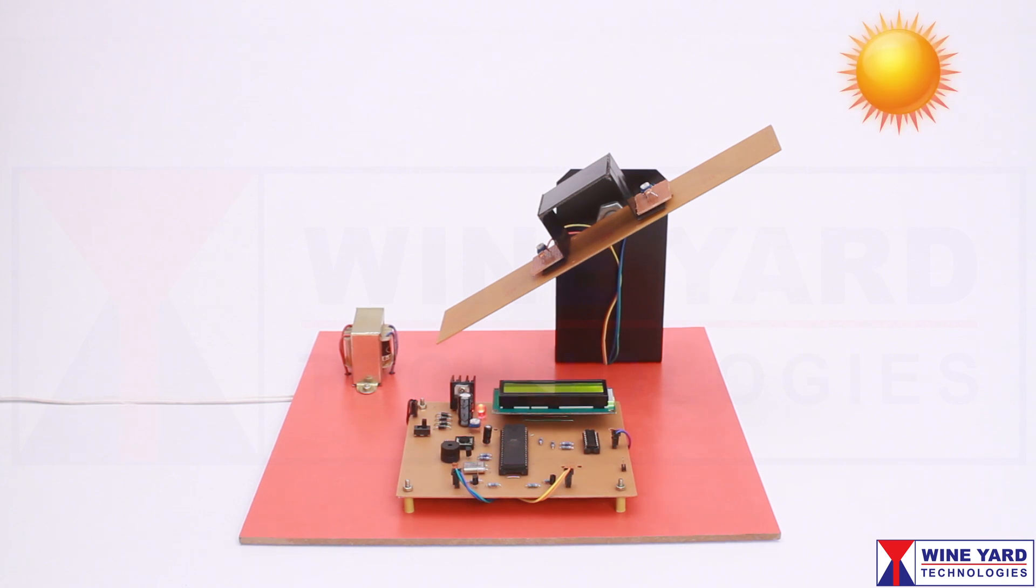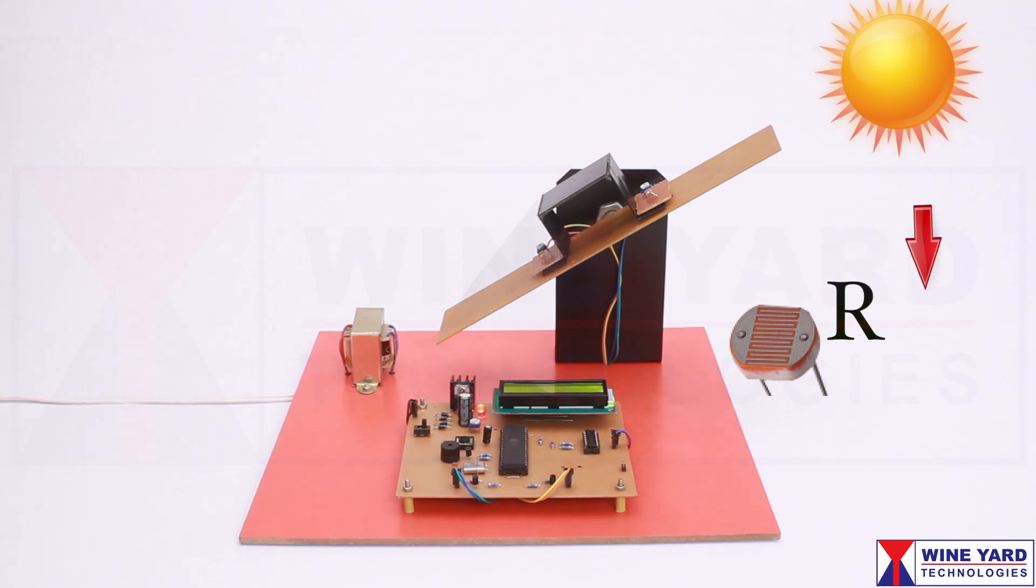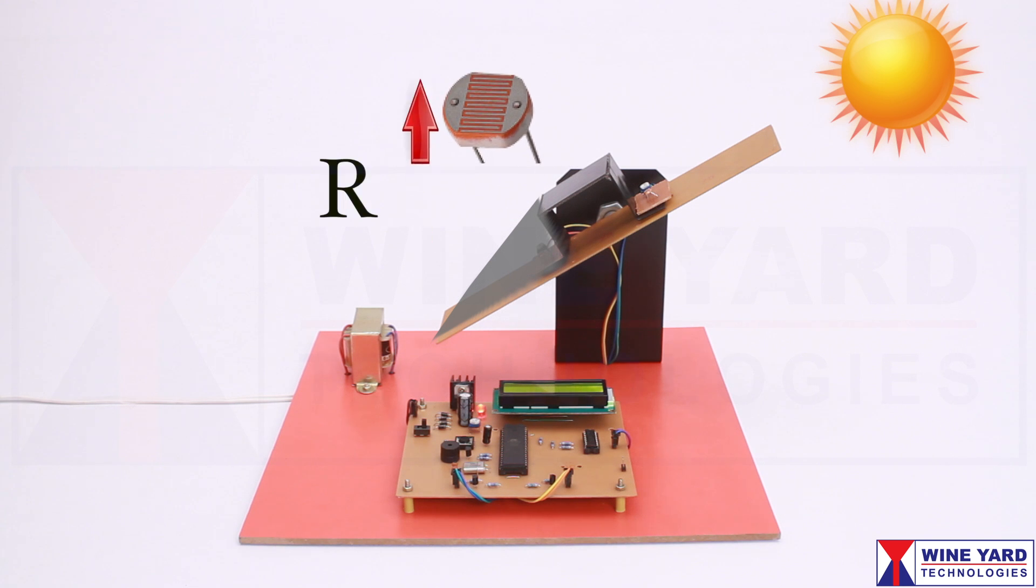If the sun is at this direction, this LDR is in bright light and offers low resistance. But you can see here, this LDR is in darkness as the shadow falls on it and offers high resistance.